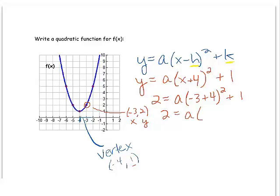So inside these parentheses, we get negative three plus four is one. Next, I'm going to square one to get one. And one times a is just a, so I'll write it as a. Subtract one on both sides, and there it is. I found a to be one.